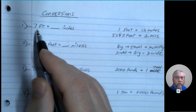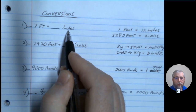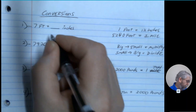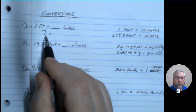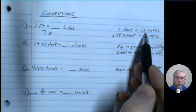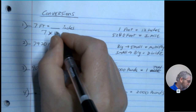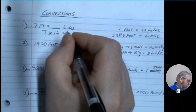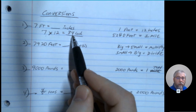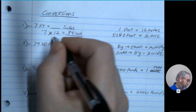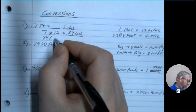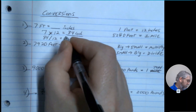Let's say I'm given 7 feet and I need to convert it to inches. Since it's going from a larger to a smaller unit, I know I'm going to multiply. My initial value is 7, so it's going to be 7 times 12, because 1 foot is equal to 12 inches. 7 times 12 gives me 84, so my answer is 84 inches. I could totally reverse this — given 84 inches, I divide, and that gives me 7 feet.